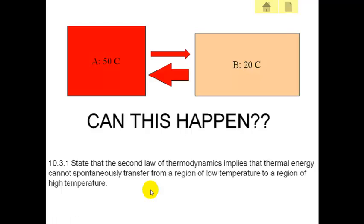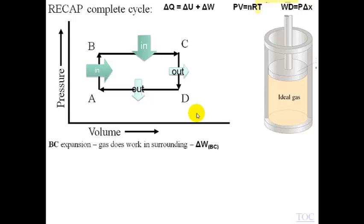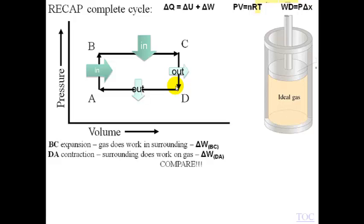First, a recap of the heat engine from last lesson. We have a cycle of thermodynamic phase changes. Work is done between B and C, and work is done between D and A. The work done between B and C is greater than the work done on the gas between D and A because the area underneath is different. The work done between B and C is work done by the gas; D to A is when work is done to the gas as the gas contracts.